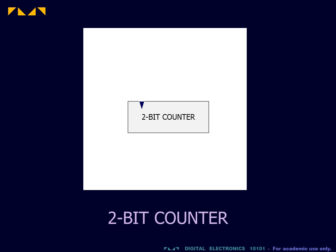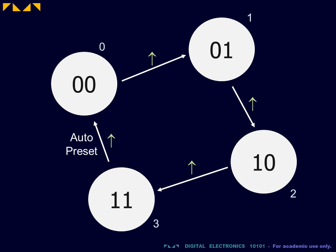We will design a 2-bit counter, which we will interpret using the unsigned integer representation. A 2-bit counter counts up from 0 to 3. After 3, the counter will automatically preset to 0.